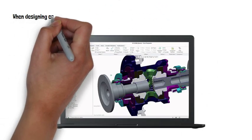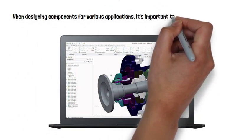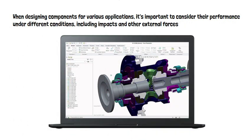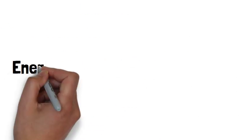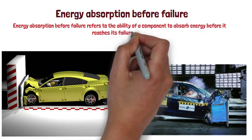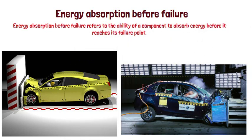When designing a component for various applications, the component goes under different conditions — sometimes impact loading, sometimes other external forces. The parameter that needs to be considered is energy absorption before failure, which is the ability of the component to absorb energy before it reaches the failure point.